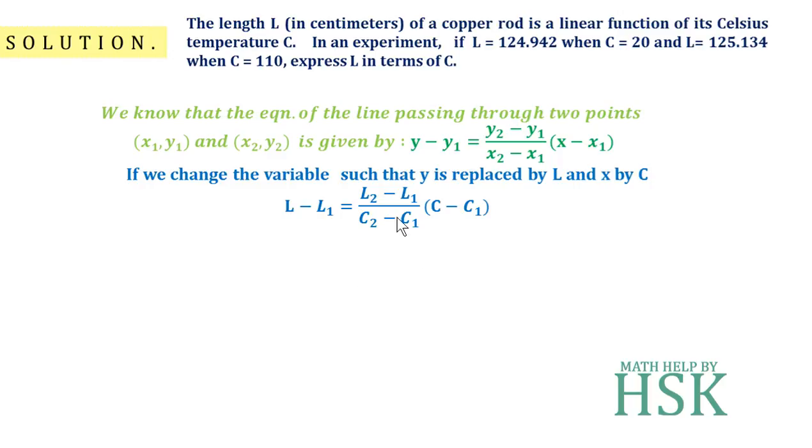What are C₁, L₁ and C₂, L₂? They are simply the values: (20, 124.942) when the Celsius temperature is 20 degrees the length is this much, and (C₂, L₂) is (110, 125.134). We have been given the two points on the line, and this is the equation of the line. We have to just place the values to get the equation of the line, or in other words, the linear function.